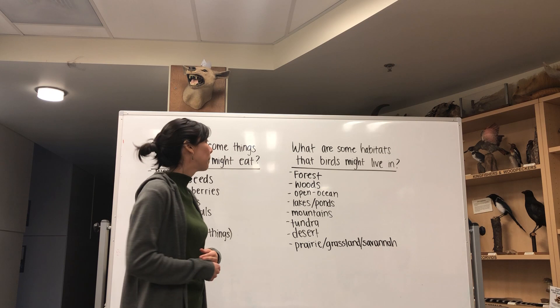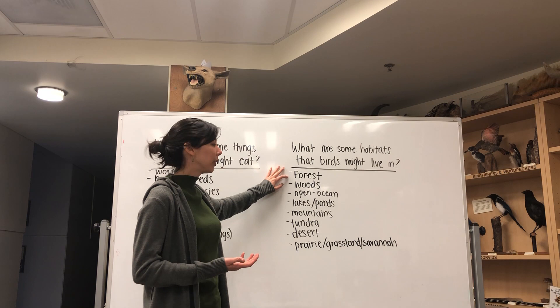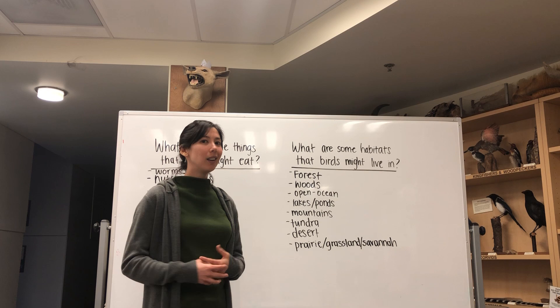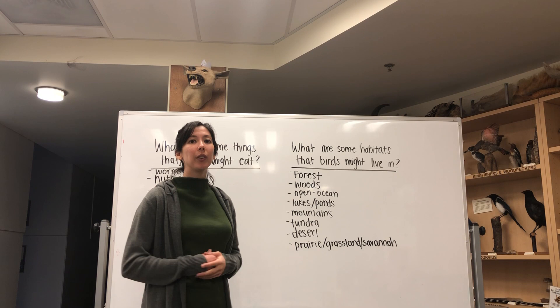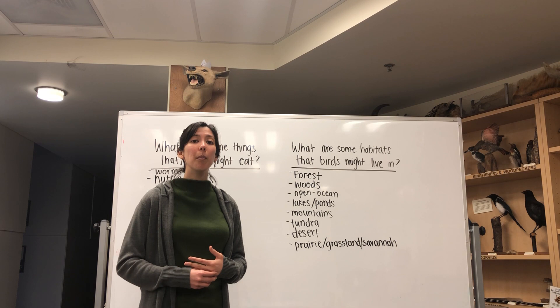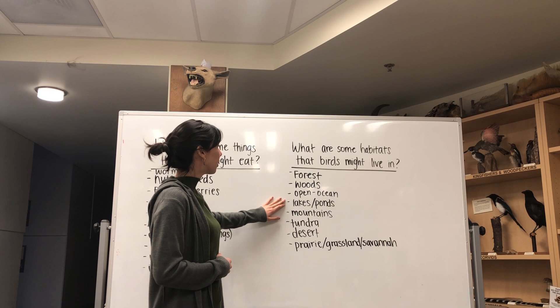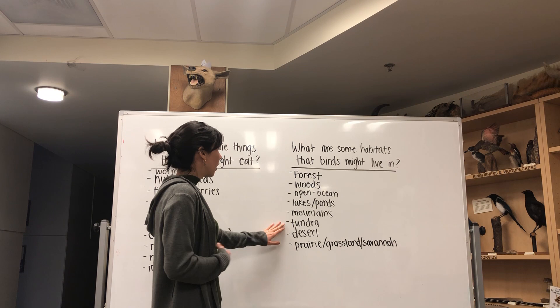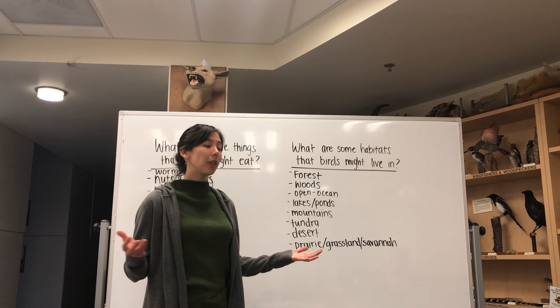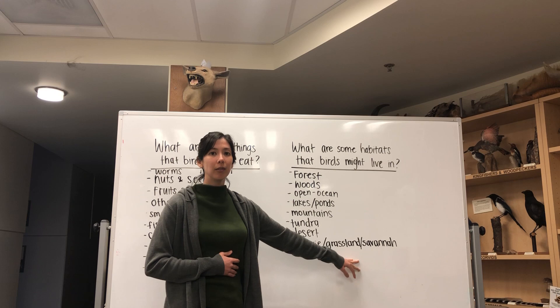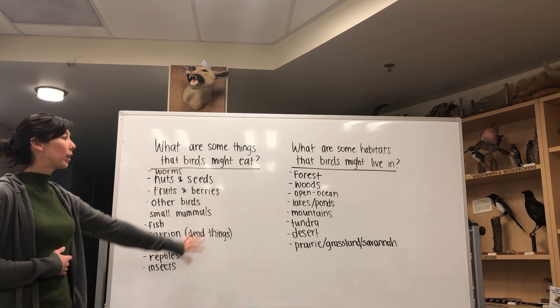For habitats, feel free to add to your list as we go. Birds can live in the forest — including the rainforest and the drier woods — the open ocean, where some birds spend their entire lives flying and sleeping over water, lakes and ponds, mountains and caves, the tundra with its snowy fields like where penguins live, and the desert, prairie grassland, or savannah. Pause the video if you want to add any last items to your list.